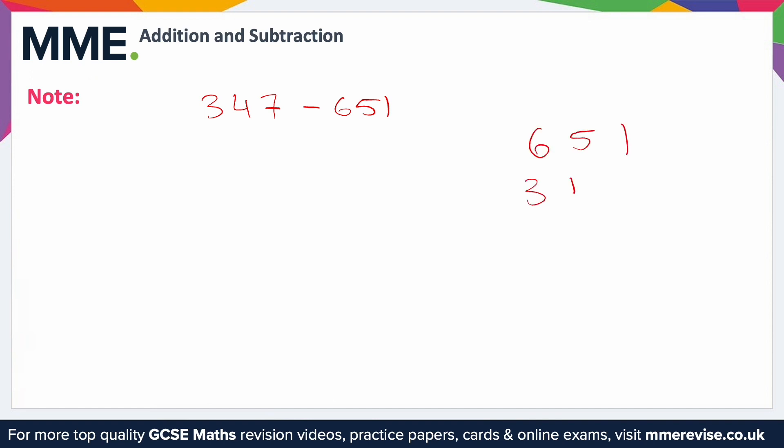The smaller number on the bottom like that, then do it exactly the same as you would normally. So one take away seven, we can't do that, so we'll borrow one from this column—that becomes 11. 11 take away seven is four. Four take away four is zero. Six take away three is three. So then I can say that this is 304, but you might be looking at that and thinking, well, that doesn't make any sense.